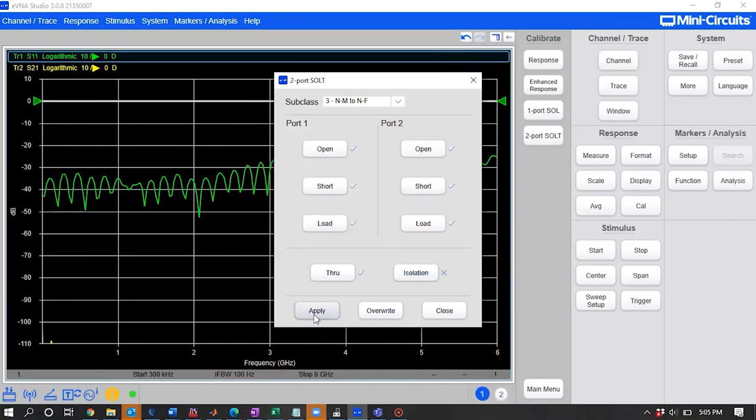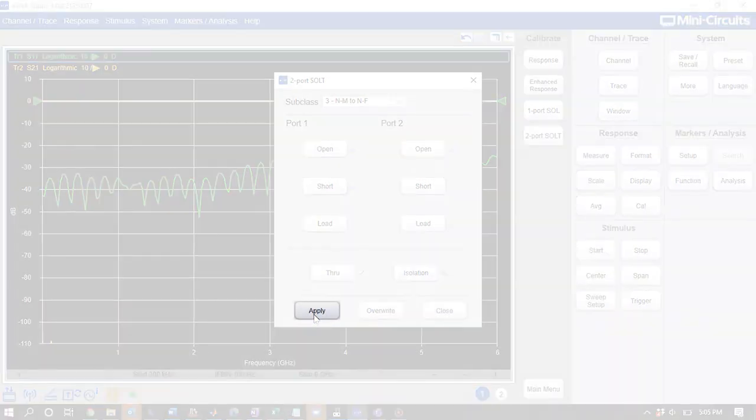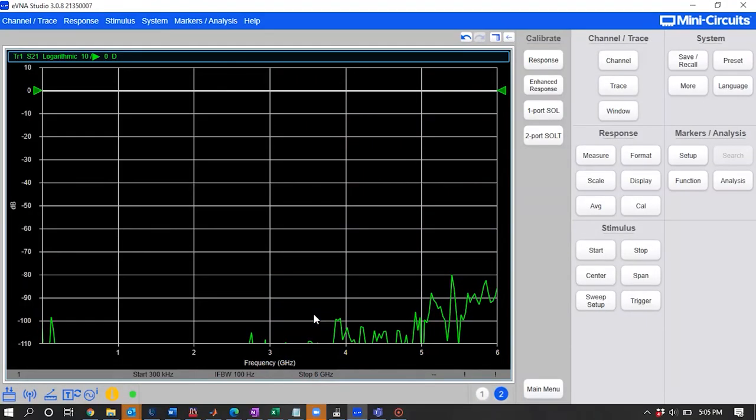Once all the measurements are completed, apply the calibration and save the calibration state in the system menu for future recall. Now your calibration is complete and you are ready to measure your DUT.